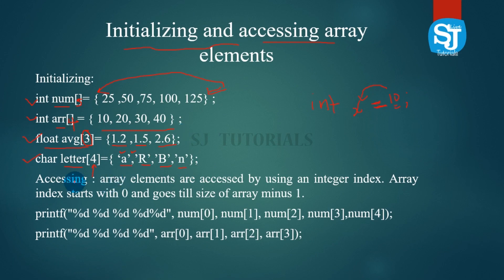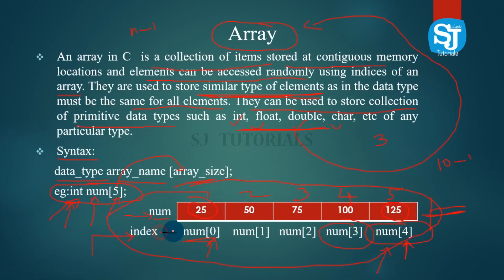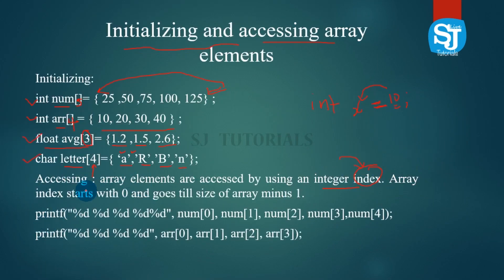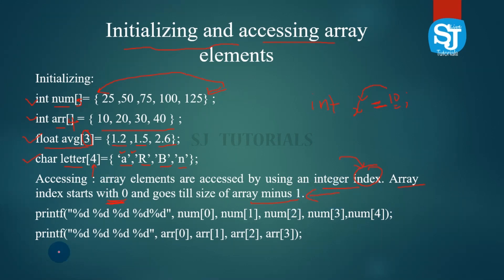Let's use index values to access the array elements. Array elements are accessed using an integer index. The array index starts with 0 and goes till the size of the array minus 1. So index 0 is the starting index and index 4 is the ending index for a size-5 array.